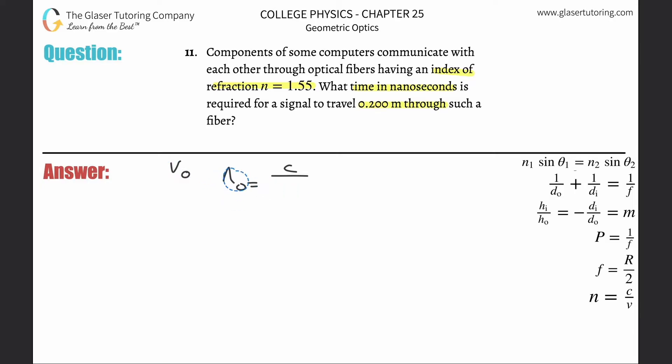Now to solve this for V, just do a little cross multiplication. Don't bring half the equal sign with you though. So now all we need to do is plug in the values. Speed of light is 3 times 10 to the 8.